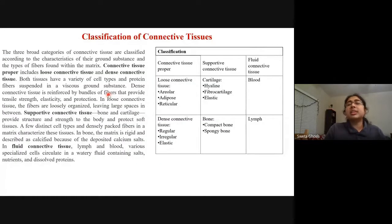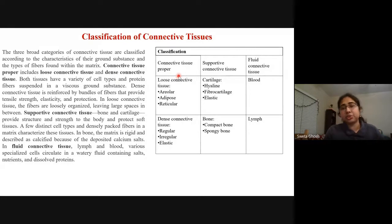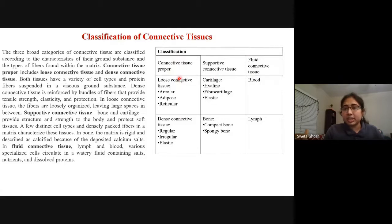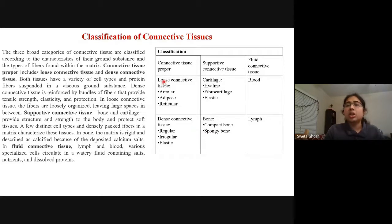Connective tissues have different classifications depending on need and structure. Connective tissue proper has two types: loose connective tissues (loosely packed — areolar, adipose, and reticular) and dense connective tissues (tightly packed — regular, irregular, and elastic). There are also supporting connective tissues and fluid connective tissues.